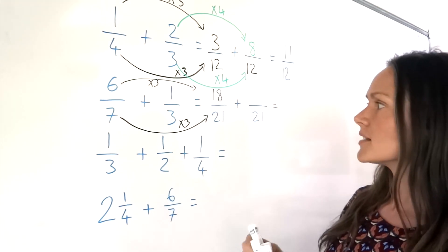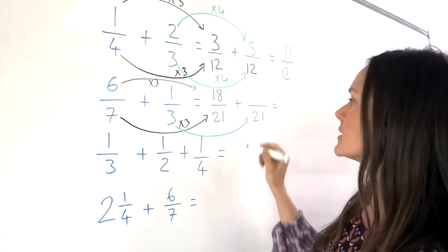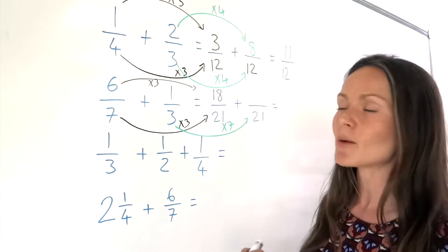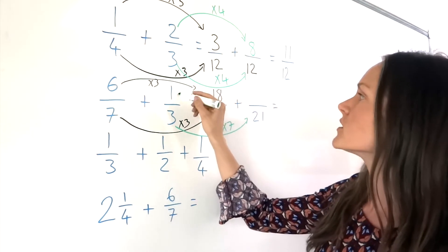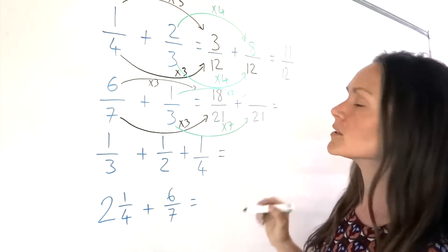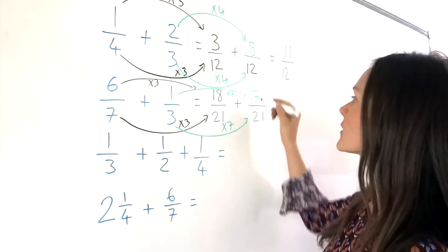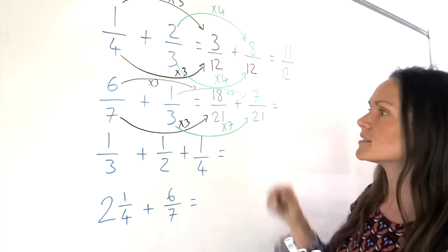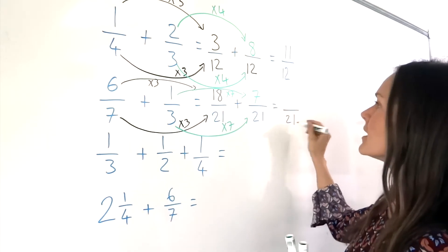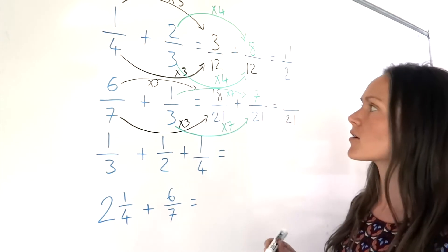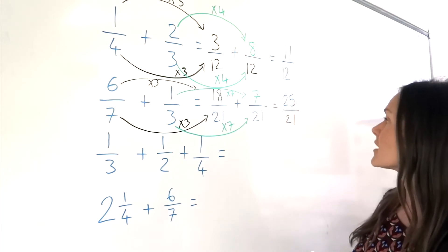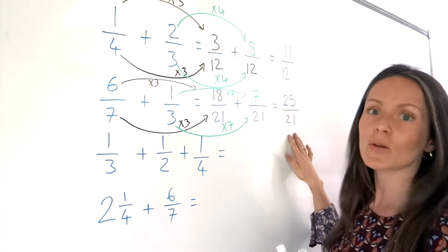Now for the second one. To get from 3 to 21, I must multiply by 7. So I have to do the same with the top number — this numerator here, 1. I'm going to multiply that 1 by 7. So 1 times 7 is 7. Now I've got my common denominators, I can add the fractions together. Remember, the denominator stays the same — it's the numerators that we add together. So 18 plus 7 is 25. That's my final answer. I can't simplify this fraction.